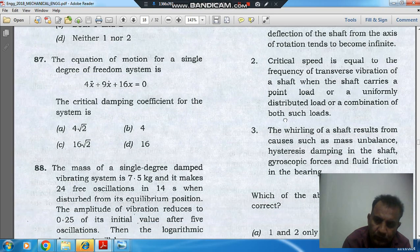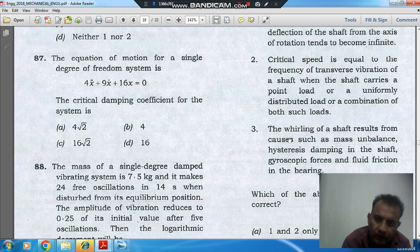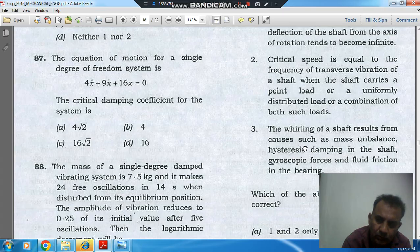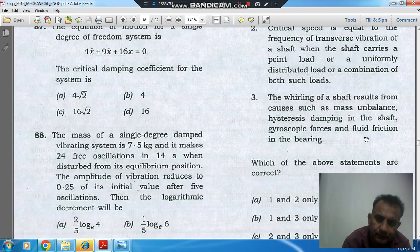Third statement is also correct. The whirling of shaft results from causes such as mass unbalance, hysteresis damping, fluid friction in the bearing. So whirling means when the shaft deflection tends to become infinite. So that can be due to mass unbalance, hysteresis damping, or gyroscopic forces, or fluid friction.